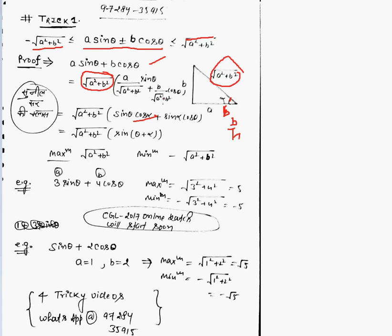Same is b upon root a squared plus b squared is sine alpha, because perpendicular upon hypotenuse is sine. This becomes the formula of sine (a + b): sine a cos b plus cos a sine b, sine (θ + α). And I know the maximum value - this is variable, this is constant.